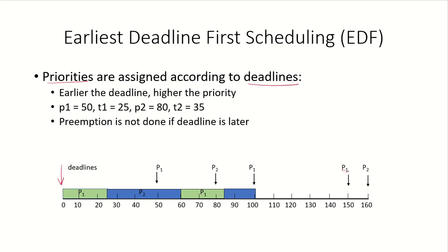At time 0, we have both processes P1 and P2 in the system. Whatever is the deadline of these processes, that will decide the priority of the process. Earlier the deadline, higher the priority will be for that process.